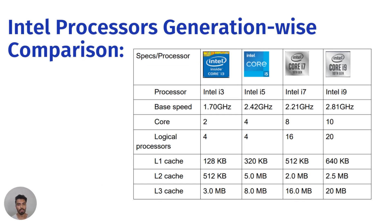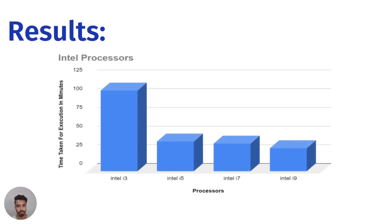Next, we took a comparison of different generations of Intel processors: Intel i3, i5, i7, and i9. We ran the bubble sort algorithm on different systems comprising i3, i5, i7, and i9, and we can see the specifications of all the processors. As expected, the i9 outranked all the lower generation processors.